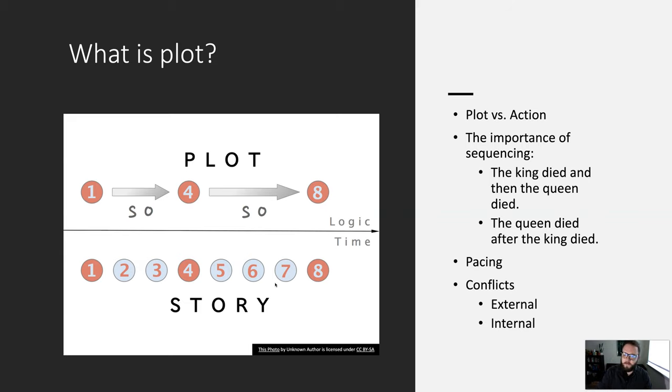When we're talking about plot, we're really talking about the way in which the author has sequenced and paced events, so the order that events fall and the amount of time that gets spent on these events. Plot really focuses mostly on the relationship between a couple of big things, whereas story or action is really concerned with all of the minute details of exactly what happens.